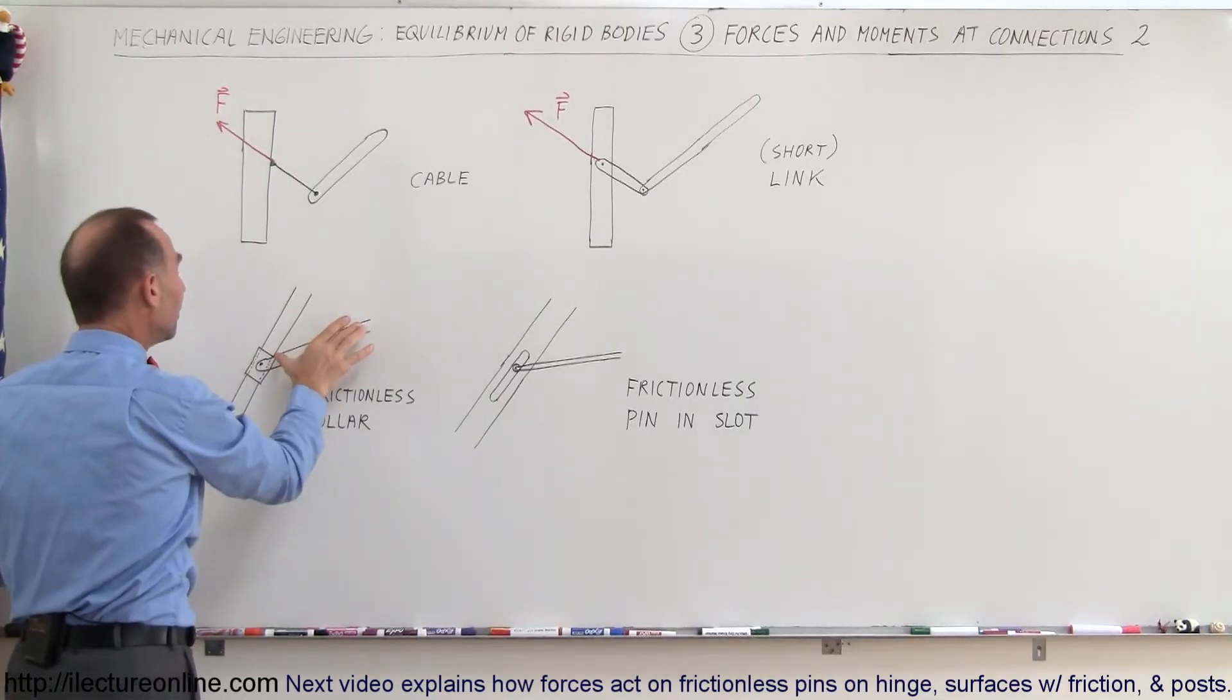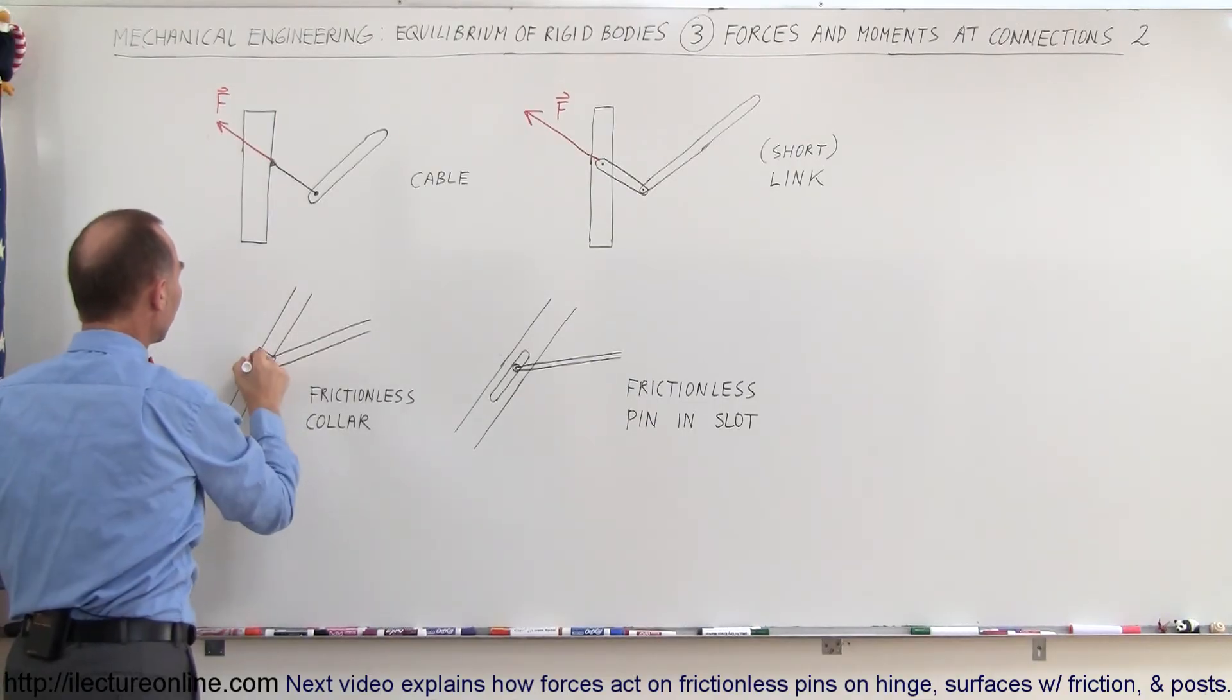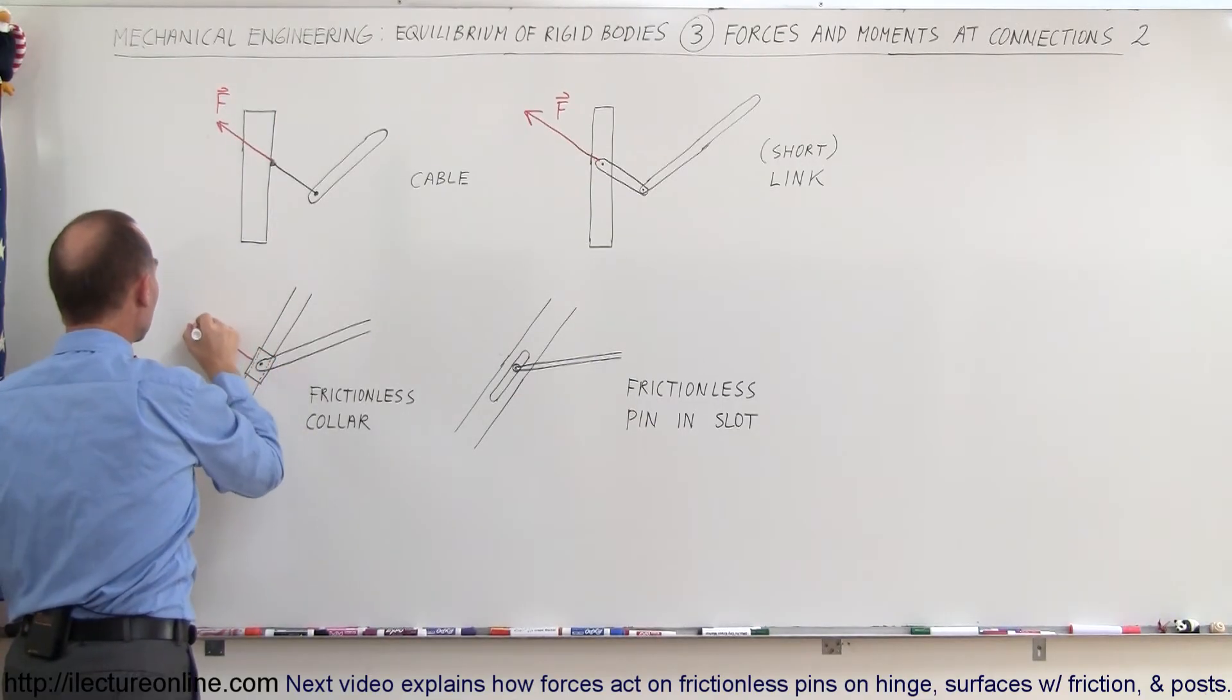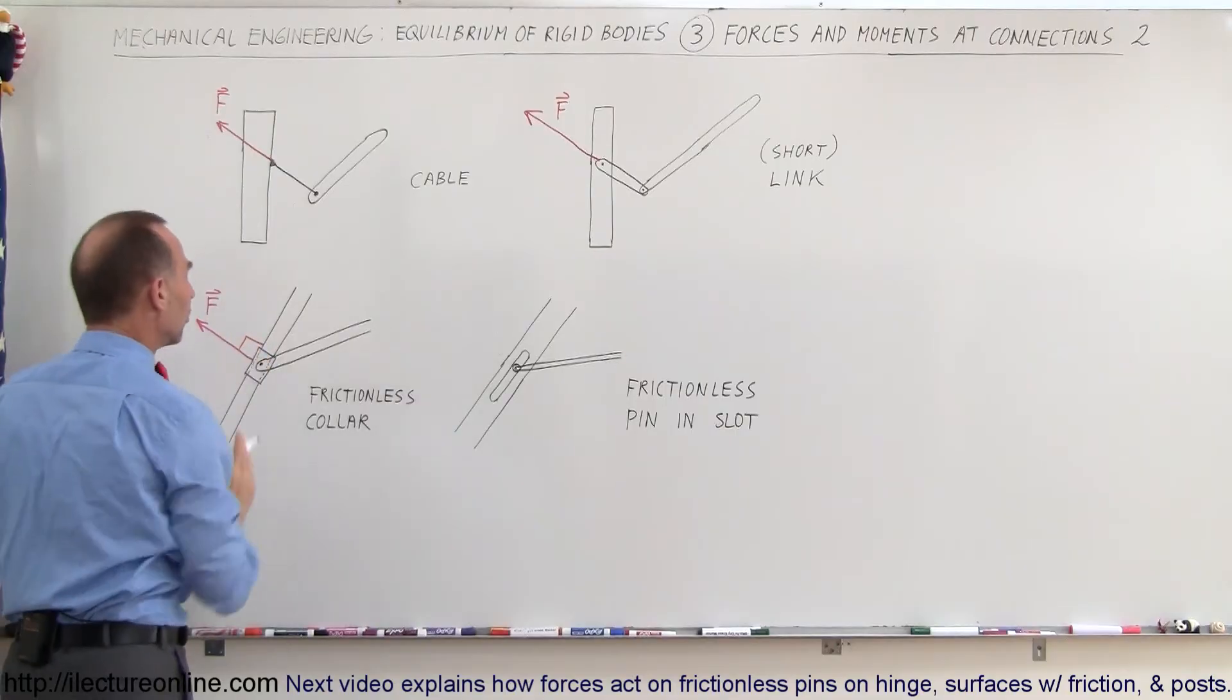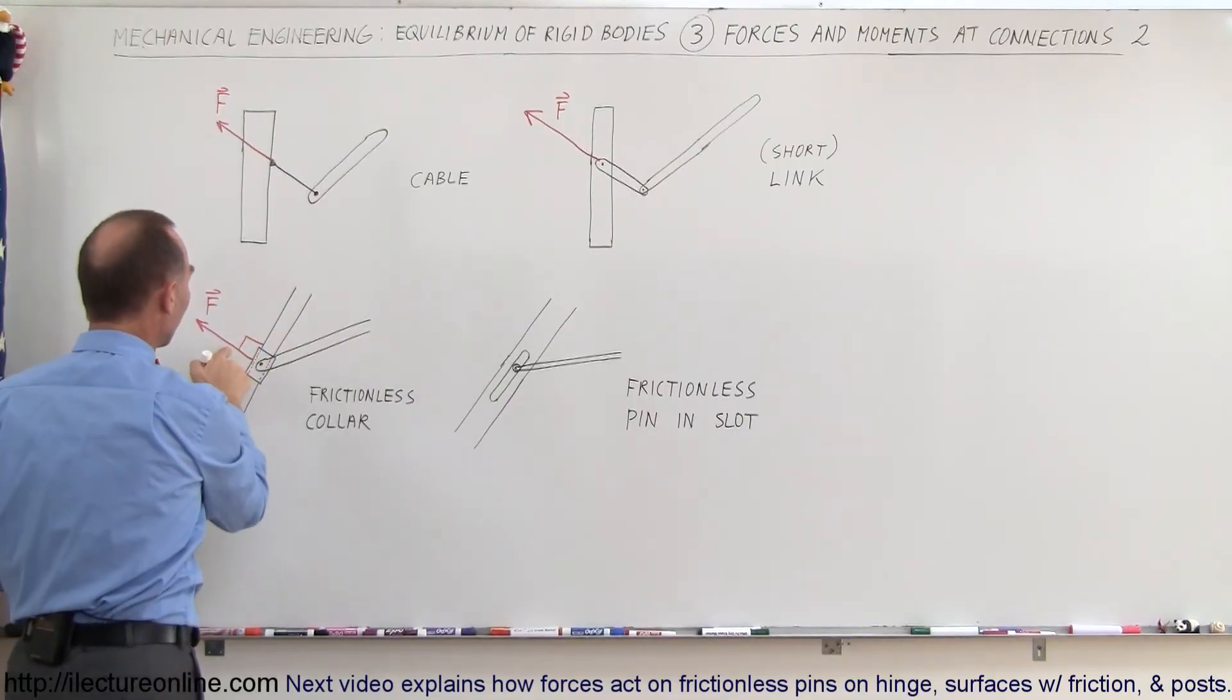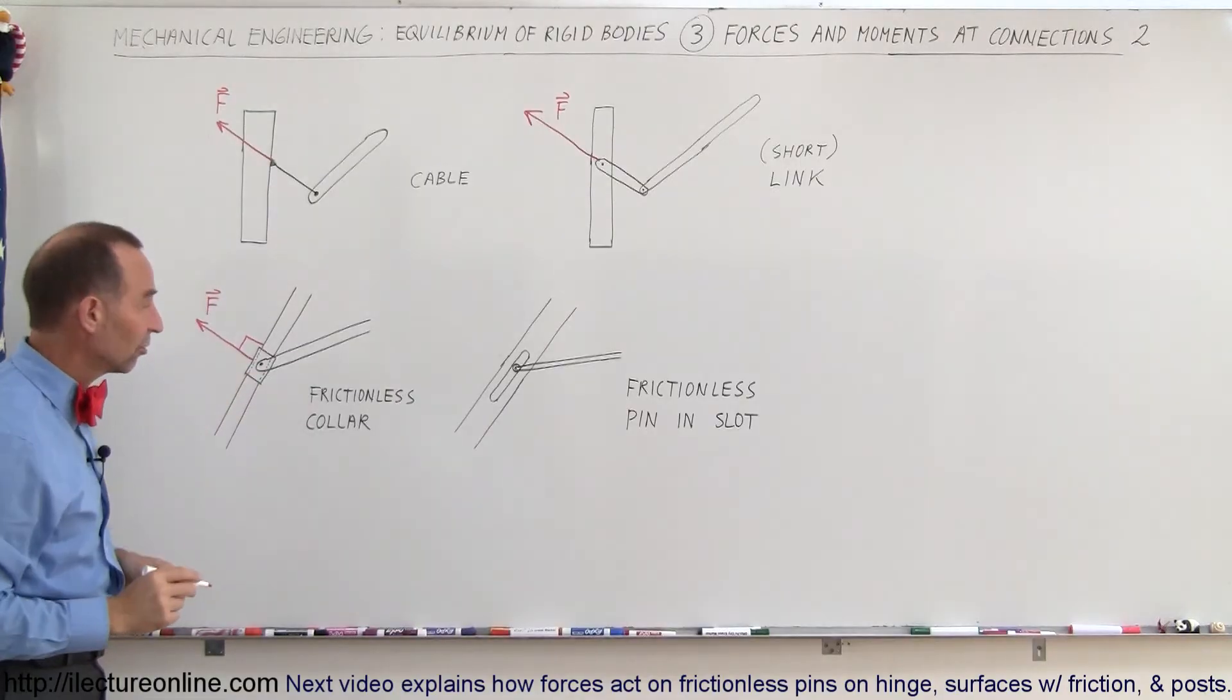So in this particular case, this beam right here which is connected to the sleeve will be supported in such a way that the force is perpendicular to the frictionless surface. So you can see here that it's always, regardless of the orientation of the supporting beam, the force will always be perpendicular to the surface of the beam because it is frictionless.